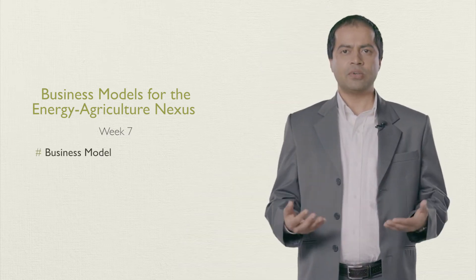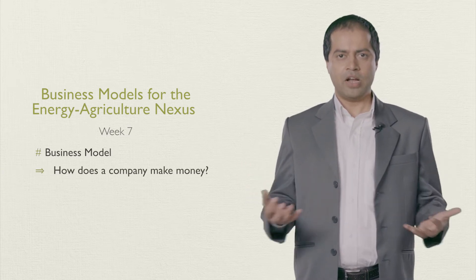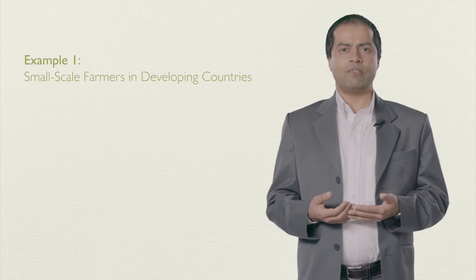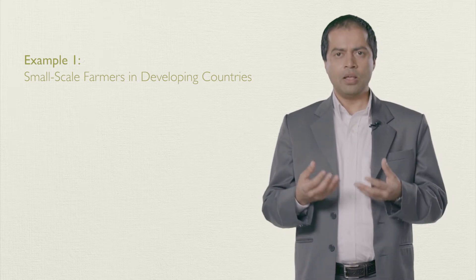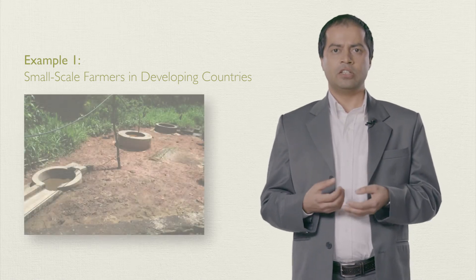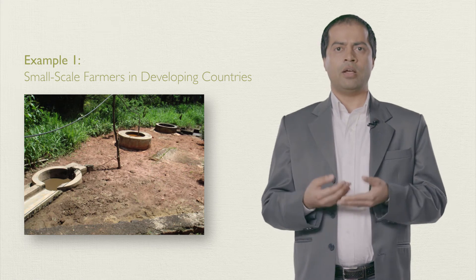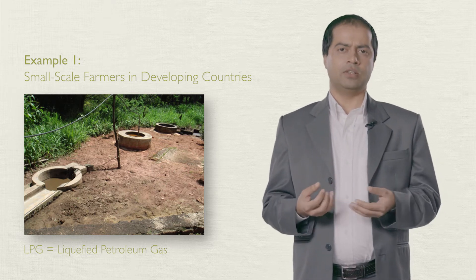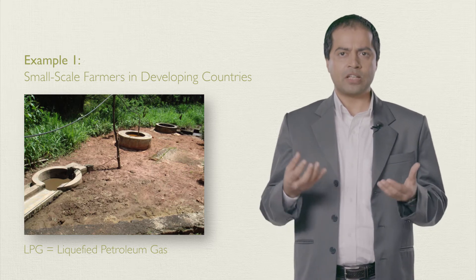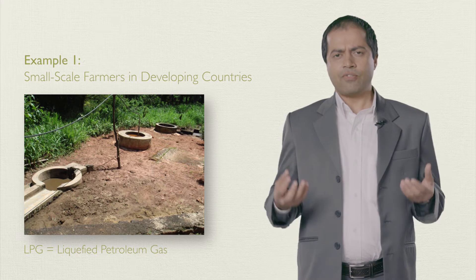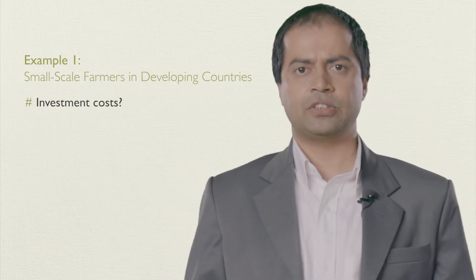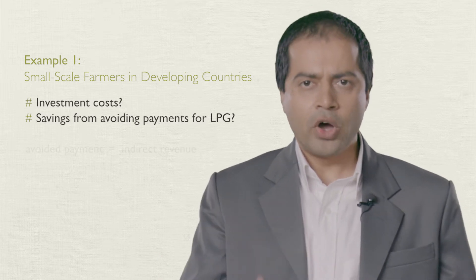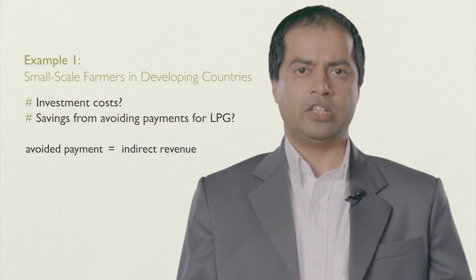What is a business model? A business model simply tells us the way how a company makes money. To understand this in our course context, let's take a simple example of small farmers in developing countries. A family living in a small village in Kenya might be interested in installing a household-sized biogas plant and replacing LPG gas with biogas for cooking. We assume the family owns some cattle, and the manure can be used as substrate in biodigesters. The family is eager to know how much a biogas plant costs and how much payment for LPG could be avoided after cooking with biogas. This avoided payment is indirect revenue, because it is a direct saving.